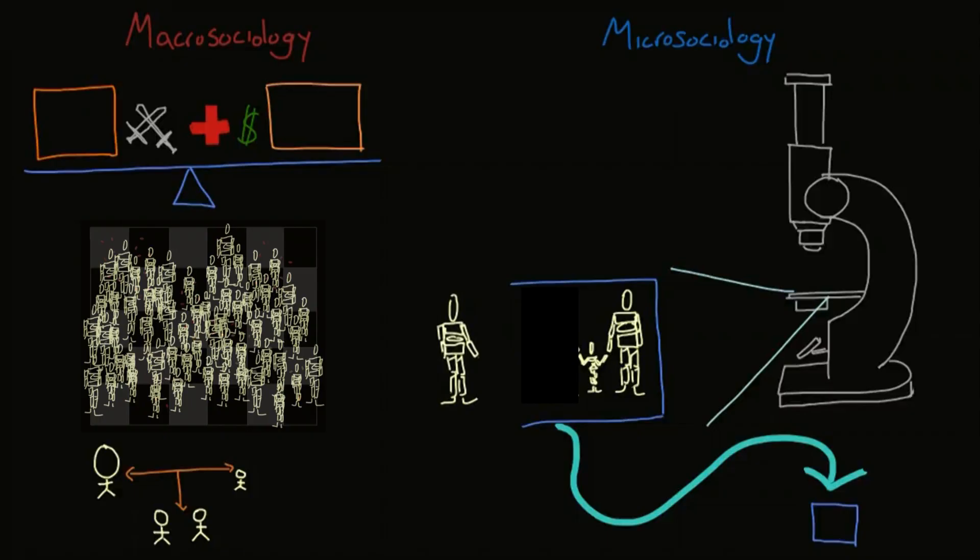Cool, so you have macrosociology starting from the big picture and seeing how it affects the individual. And you have microsociology going the other way, looking at the individual interactions and seeing how they affect the big picture.